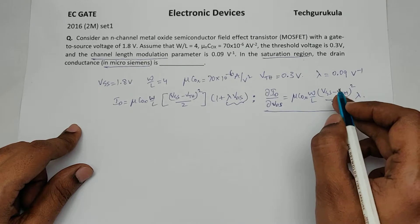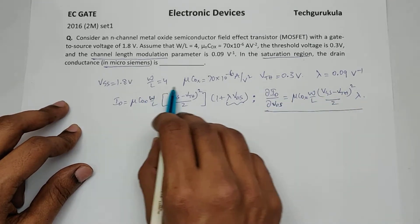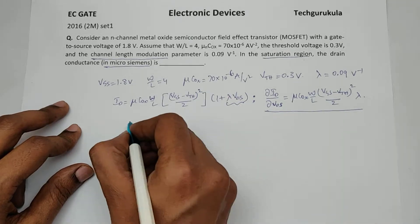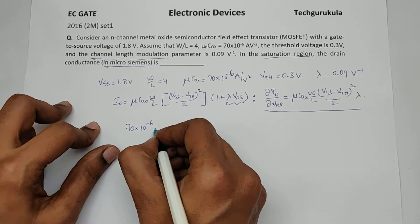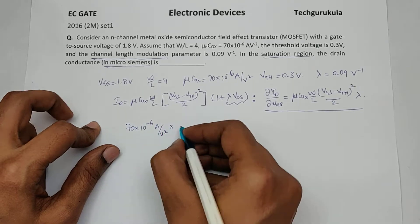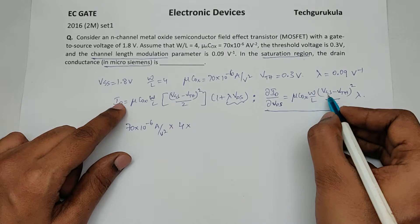So we need to find the value of this. Let's substitute the values because we have everything present there. Mu C ox is 70 times 10 power minus 6 ampere per volt square, times W by L is 4, times VGS minus VTH.